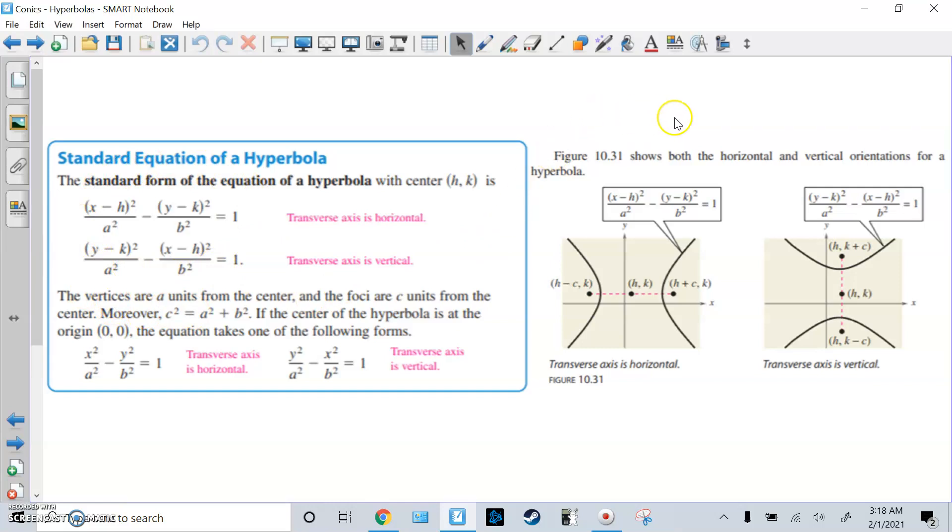Here's the picture below for the different orientations. Here x is first, it's a positive fraction, so that's why it's horizontal. Here the y squared term is first as a positive fraction, so that's why it's vertical. And from the center, you go up and down C to get each focus. From the center, you go right and left C to get each focus by adding and subtracting.